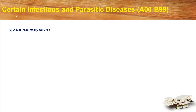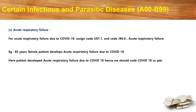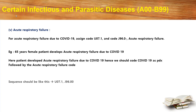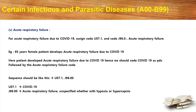Let's move into acute respiratory failure. For acute respiratory failure due to COVID-19, assign code U07.1 and code J96.0, that is acute respiratory failure. Example: a 65-year-old female patient developed acute respiratory failure due to COVID-19. Hence we should code COVID-19 as primary diagnosis followed by the acute respiratory failure code. The sequence would be U07.1 and J96.00. U07.1 is COVID-19 and J96.00 is acute respiratory failure, unspecified whether with hypoxia or hypercapnia.